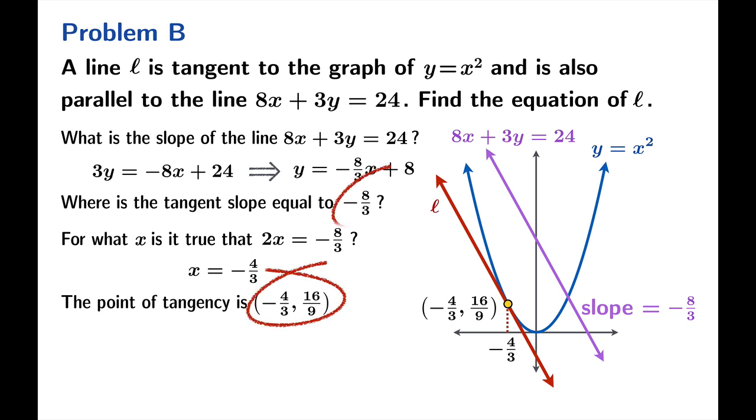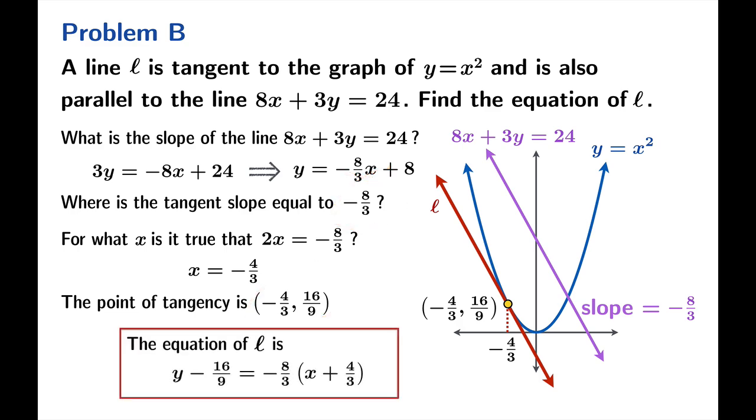We've got our point, and of course we have our slope. We already knew that the slope we're looking for had to be negative 8 thirds. And so we can just apply point slope form to write down the equation of L instantly.